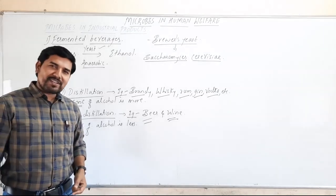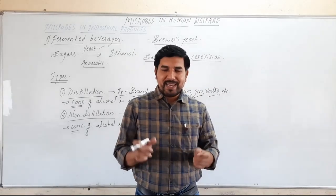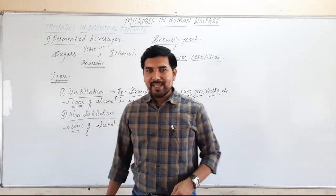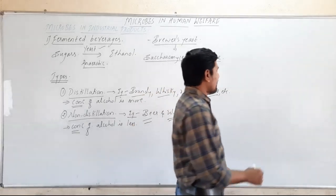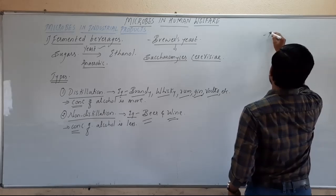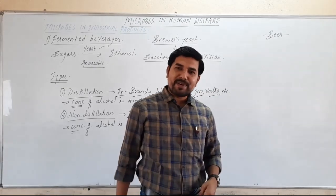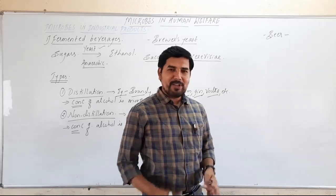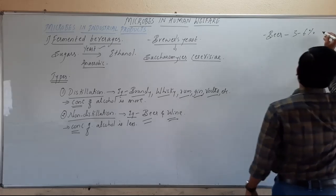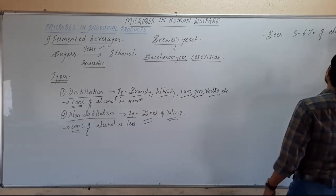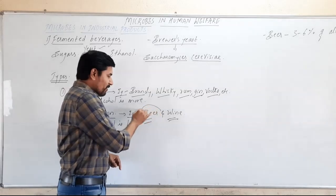Looking at the concentration of alcohol, the percentage varies from brand to brand. Beer contains around 3 to 6 percent alcohol, and the concentration might be increased up to 8 percent, but generally it has around 3 to 6 percent. Beer has the least concentration of alcohol, produced purely through the fermentation process.